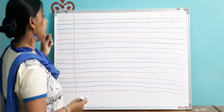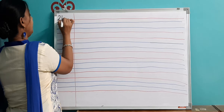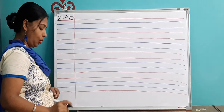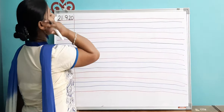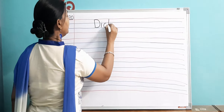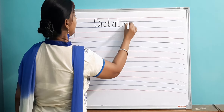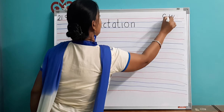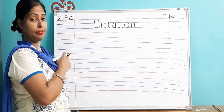I have drawn the line. I hope you have taken out your copy. Write today's date: 21.9.2020. Now you will write the heading D-I-C-T-A-T-I-O-N. This dictation means I will say the alphabets and you have to write them in your copy.